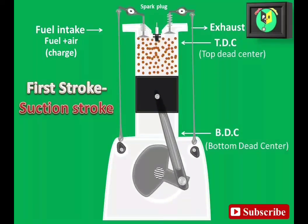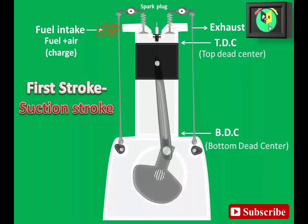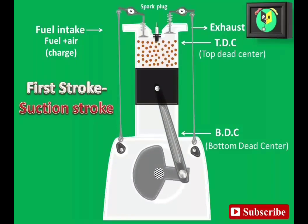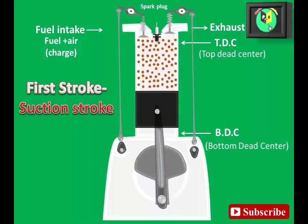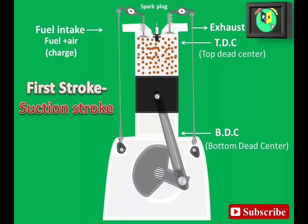It continues until piston reaches BDC. At this position, the inlet valve closes. This downward movement of the piston is known as suction stroke, and the crank rotates by 180 degrees during this period.